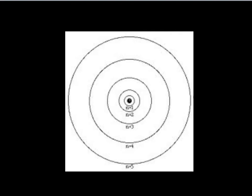Why do the different elements make different spectral lines? Where do those spectral lines come from? They come from the electrons, which is what most of this unit is going to be about. This is the Bohr model of an atom — here in the center we have a nucleus, where the protons and neutrons are, definitely not drawn to scale. Surrounding the atom, we have n equals 1, 2, 3, 4, and 5, which represent the different energy levels where the electrons are found.